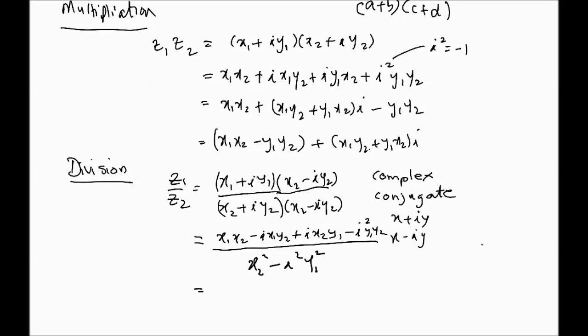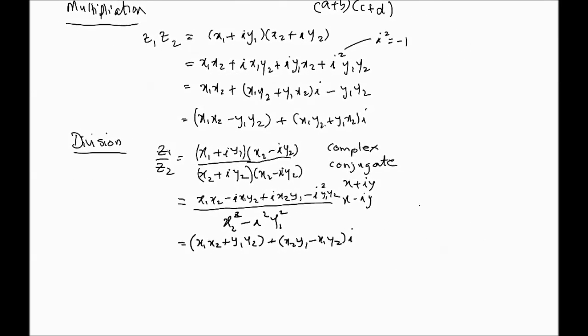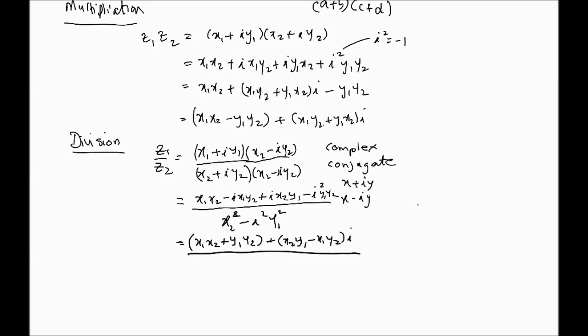Now, if you look at this, let's change all i squares to negative 1. What happens is, we get x1, x2 plus y1, y2 on top. This i squared, there's an i squared here, that becomes minus, minus minus is plus, so it gives us plus y1, y2. And then we group the rest. So, we end up with plus x2, y1 minus x1, y2i. And then, the cool part is, this denominator becomes real.